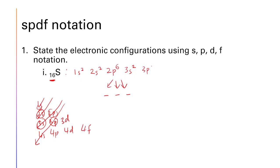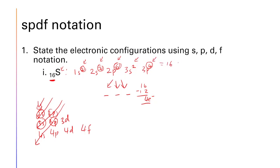For 3p, although it can hold 6 electrons, we only have 4 remaining. So it is 3p⁴, not 3p⁶. The full spdf notation for sulfur is: 1s² 2s² 2p⁶ 3s² 3p⁴. Verify: 2+2+6+2+4 = 16 electrons. That is the spdf notation for sulfur.